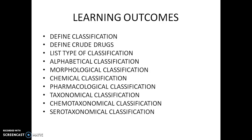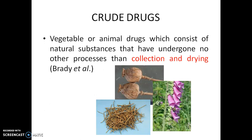In this module, we will be talking on the classification of drugs from natural origin. Before that, we have to know a certain definition of crude drugs. According to Brady et al., crude drugs means vegetable or animal drugs which consist of natural substances that have undergone no other processes than collection and drying.